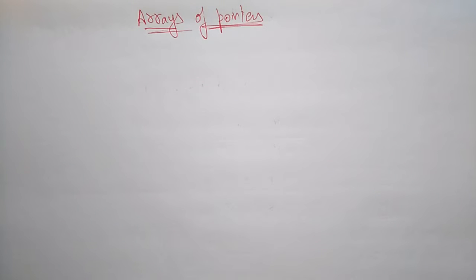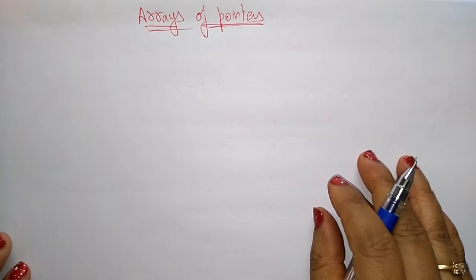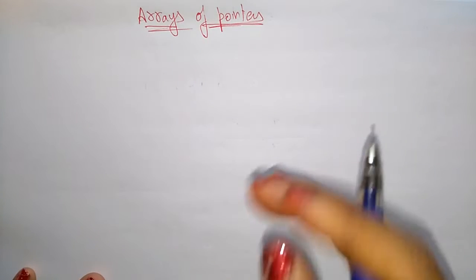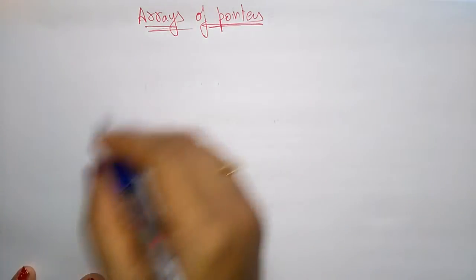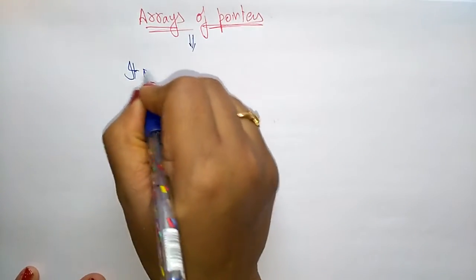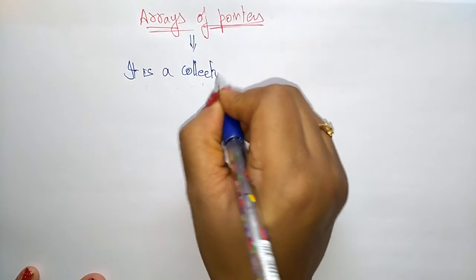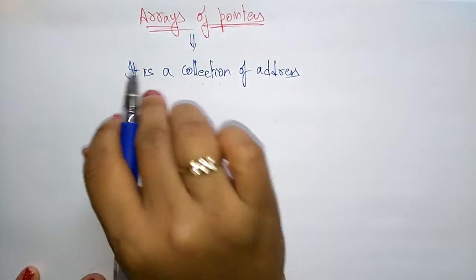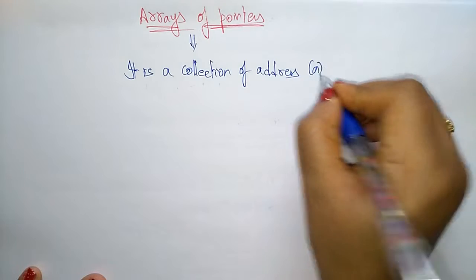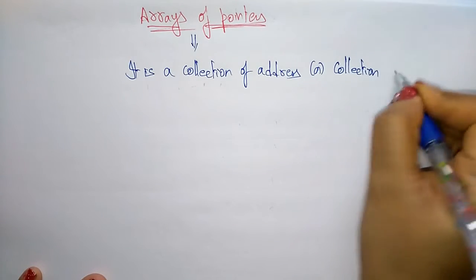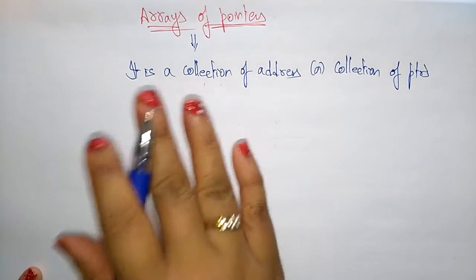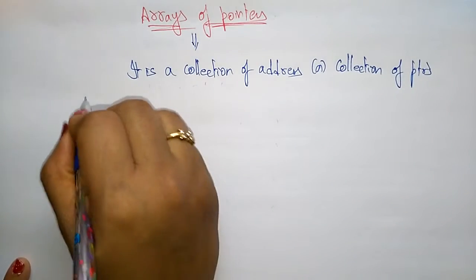Hi students, let us continue with the pointers topic. In the previous video I explained about arrays and pointers. Now let us see what arrays of pointers are. Arrays of pointers is nothing but a collection of addresses — since a pointer itself is an address, arrays of pointers means a collection of addresses.